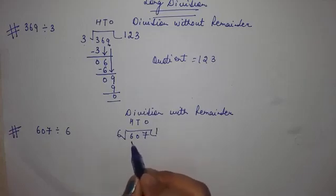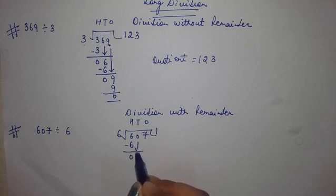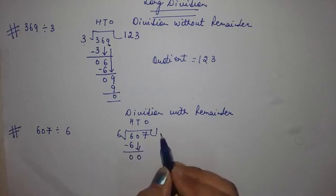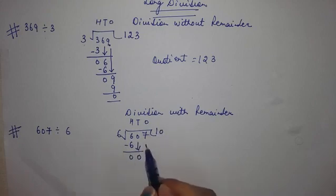Write 6 here. 6 minus 6 is 0. Put 0 here. Now take 7.